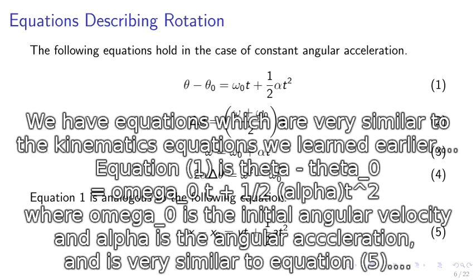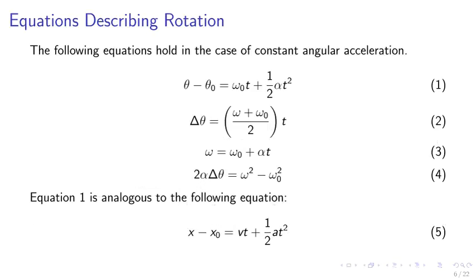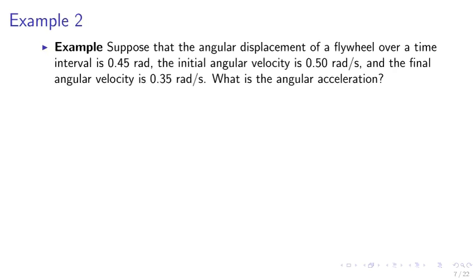Equations describing rotations. We have equations very similar to the kinematics equations learned earlier. Equation 1 is: theta minus theta-naught equals omega-naught times t plus half alpha t squared, where alpha is the angular acceleration and omega-naught is the initial angular velocity. This is analogous to x minus x-naught equals vt plus half at squared.